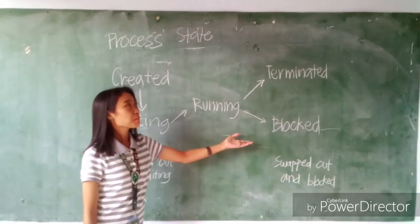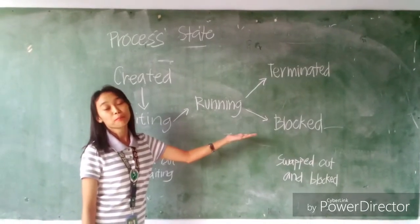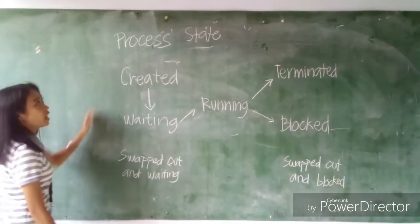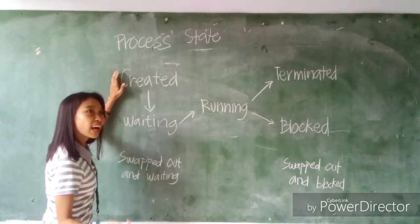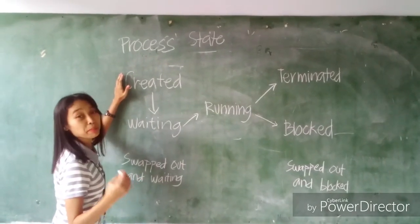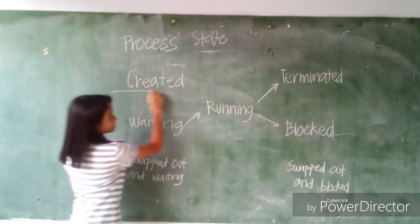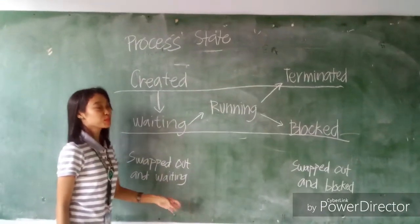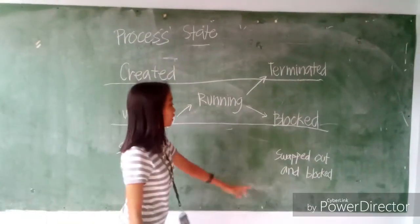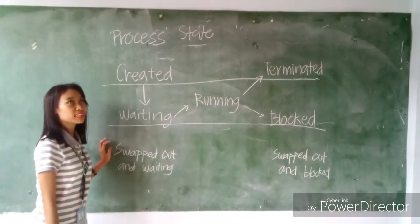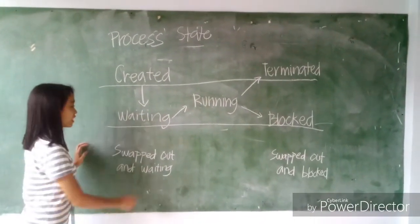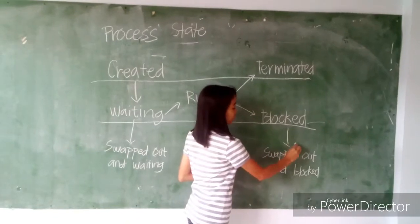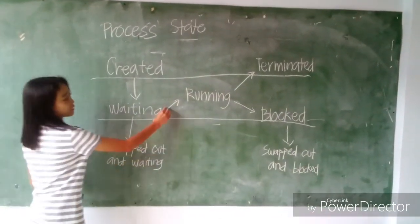This is often swapped out of primary memory. It also covers what are called the primary process states. Waiting goes to swap out, and blocked goes to swap out and blocked. That's all. Thank you.